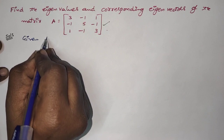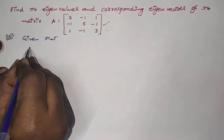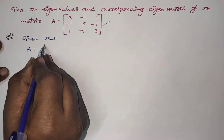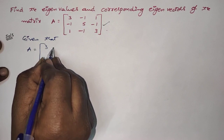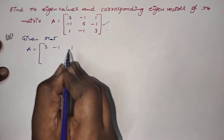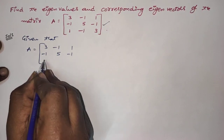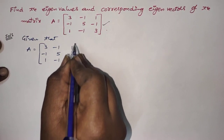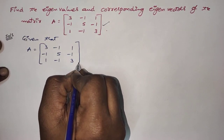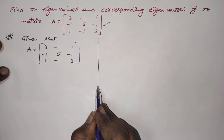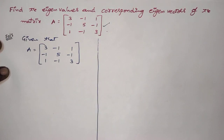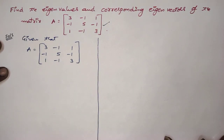First of all, write the given matrix. It would be 3, minus 1, 1; minus 1, 5, minus 1; 1, minus 1, 3. First of all, we have to find out the characteristic equation to get the eigenvalues.